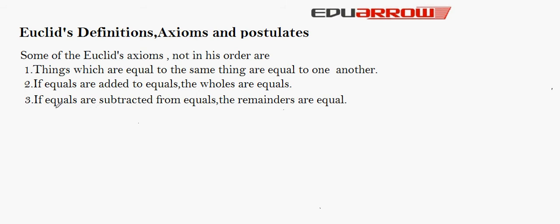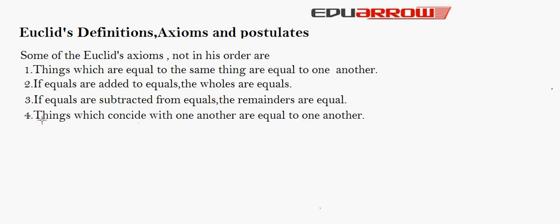Axiom 3: If equals are subtracted from equals, the remainders are equal. The same concept applies as in axiom 2 — magnitudes of the same kind can be compared and subtracted, but magnitudes of different kinds cannot. Axiom 4: Things which coincide with one another are equal to one another. If two things are identical, then they are equal. For example, if two triangles are identical, then they are equal to each other.